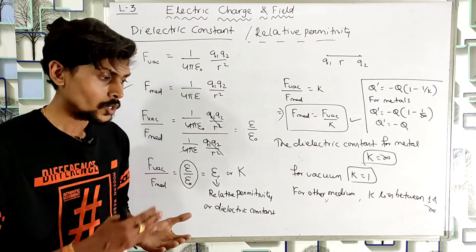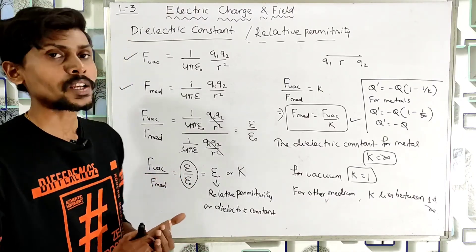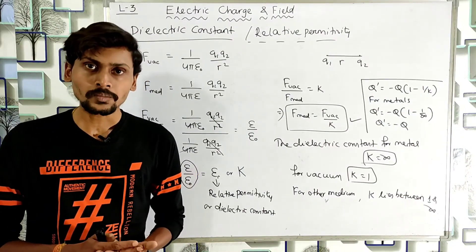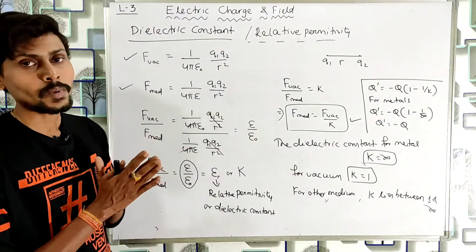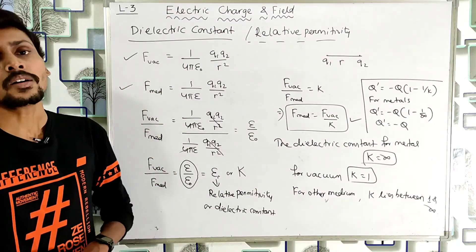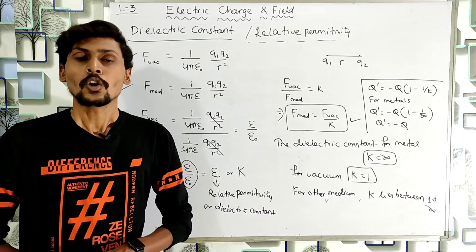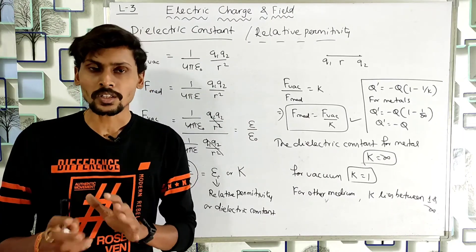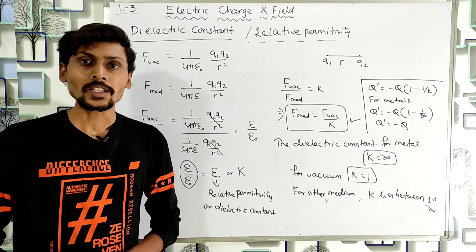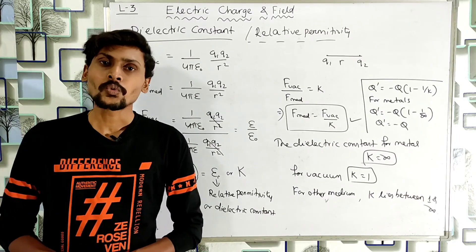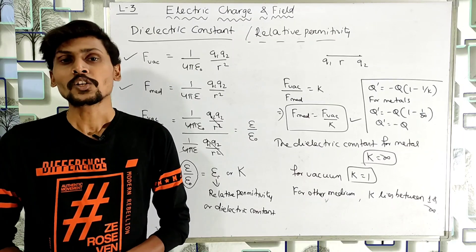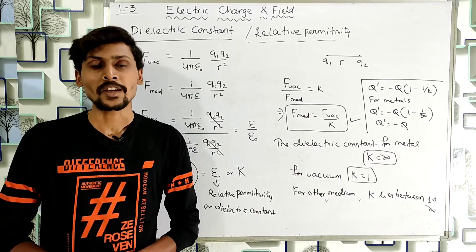Today in this class we discussed Coulomb's law, its vector form, some important points about Coulomb's law, and the dielectric constant or relative permittivity. In the next class we will discuss the superposition principle of Coulomb's law. Till then, bye bye and have a nice day.